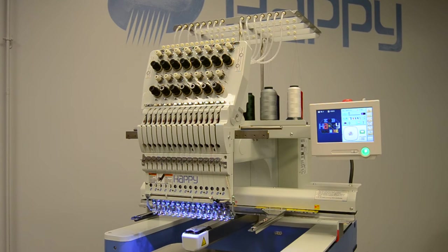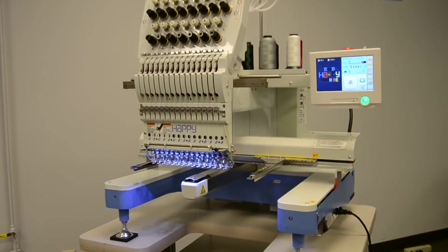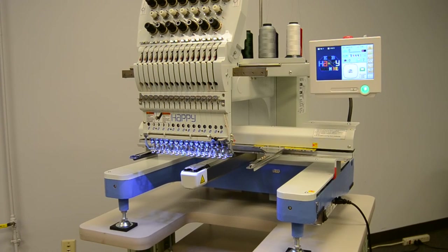To prepare your HAPI 1501 HED2 for sewing on ball caps, let's follow these steps. The first thing we're going to do is remove the regular sewing arms that hold the conventional hoops.